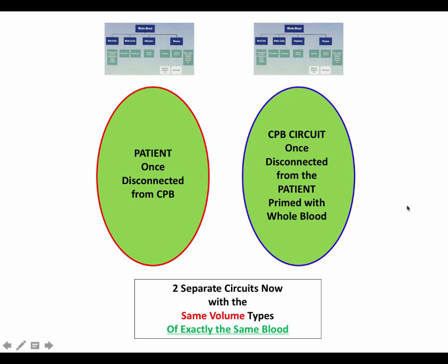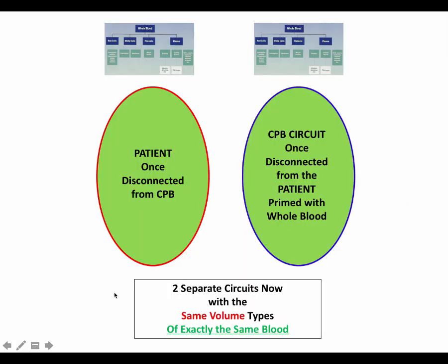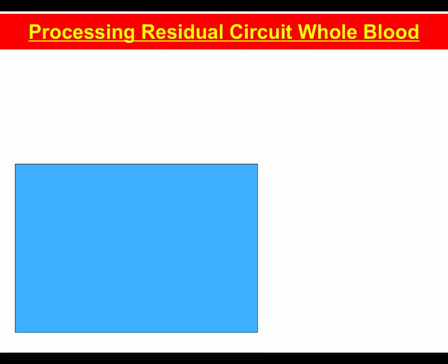So the question is: what do we do with that volume that's left in the circuit? We don't want to waste it — we'd like to use it. So how are we going to salvage that volume? How do we process the residual circuit volume — that whole blood that is in our circuit at the end of bypass? There are three primary reinfusion methods.